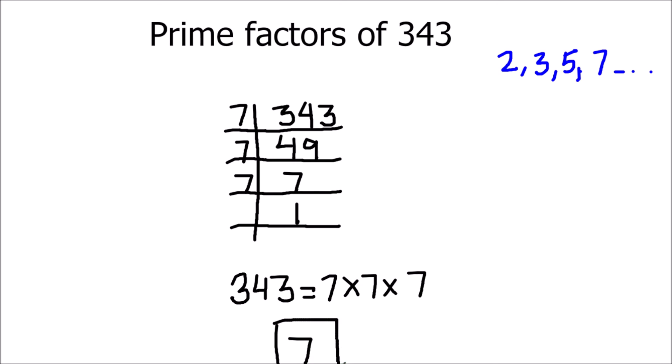7 is the prime factor of 343. So this is how we find the prime factors of any number.